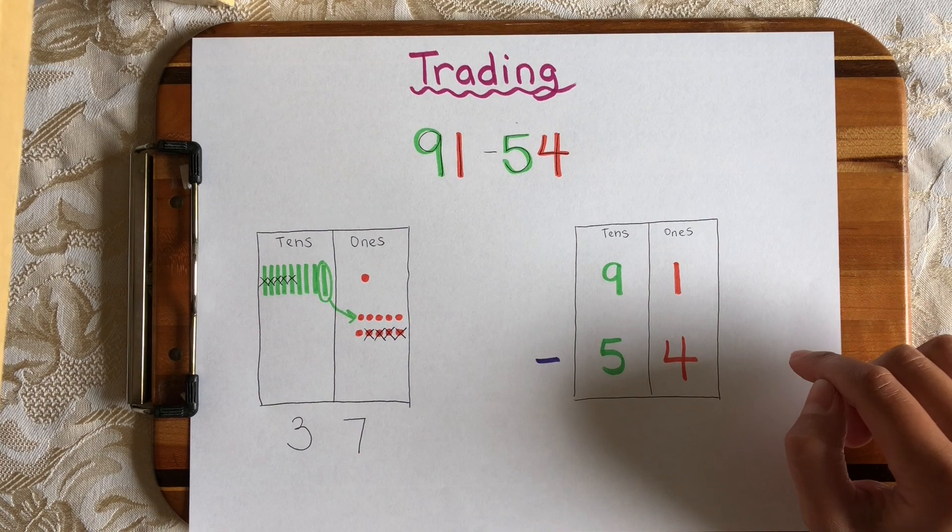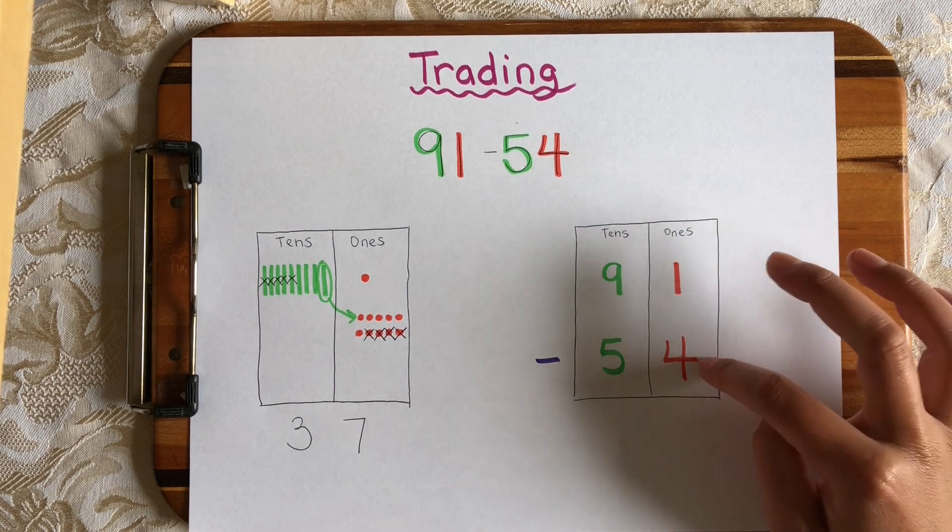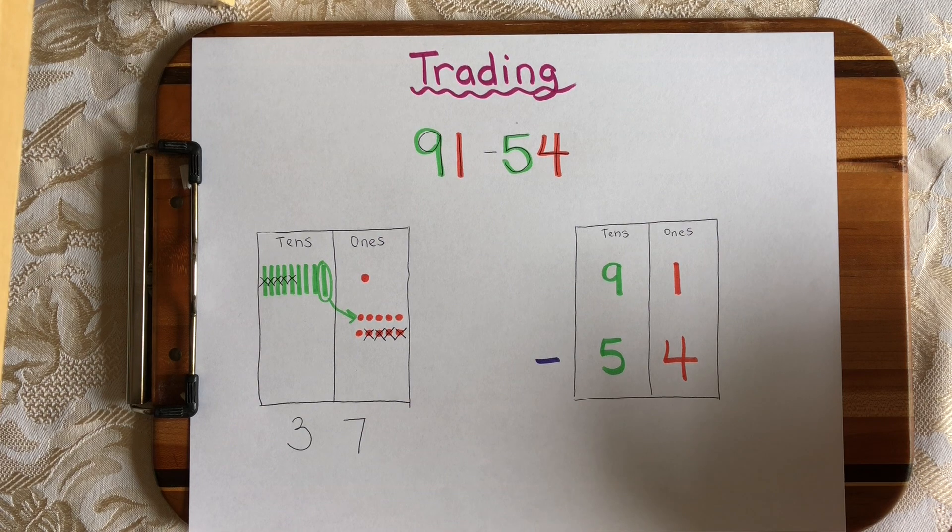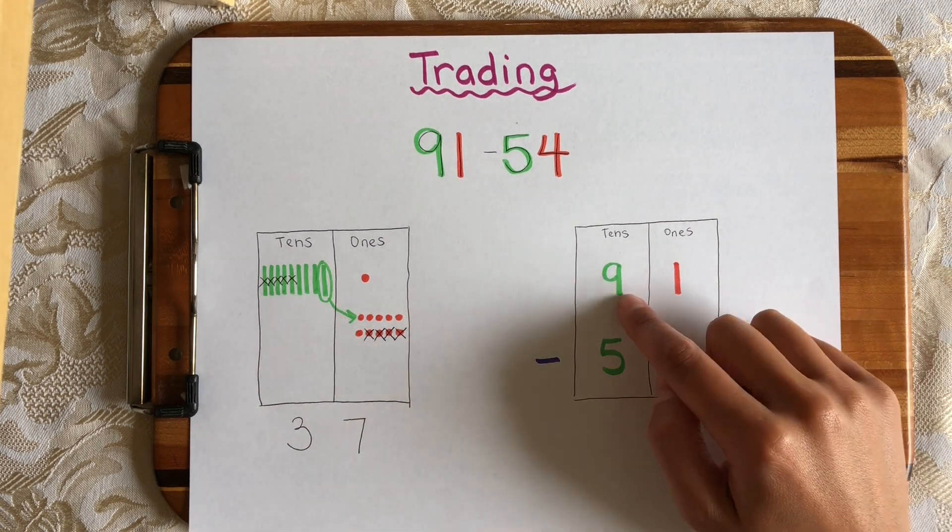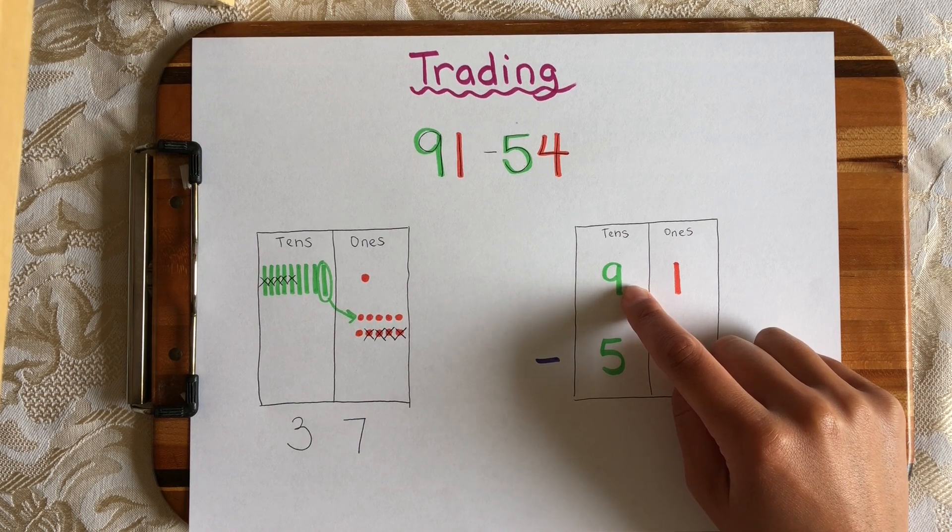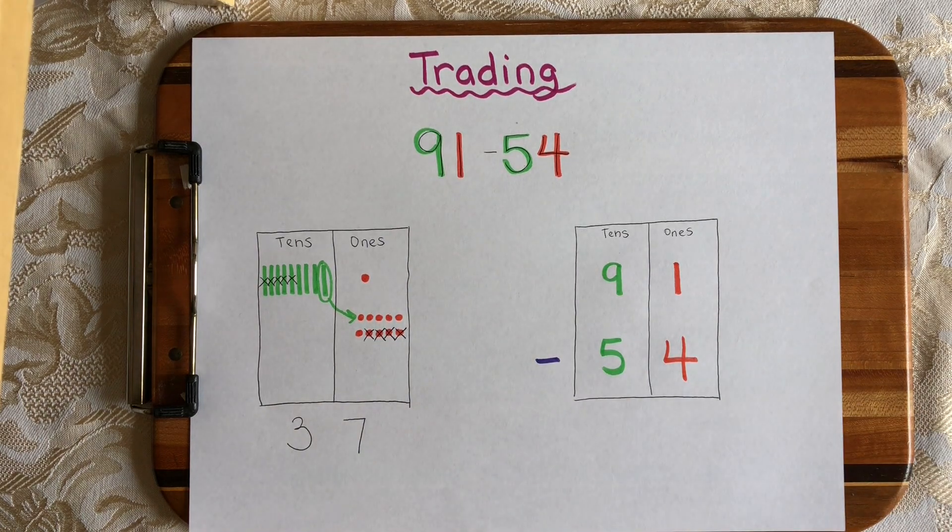So just like over here how I started off by subtracting the 1s first, I'm going to start off by subtracting the 1s over here. So 1 minus 4. We can't do that. That will become a negative number. So instead we need to go over to the 10s house and trade one of these 10s for 10 ones and that's going to look like this.